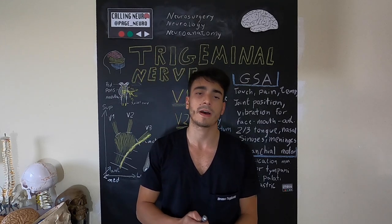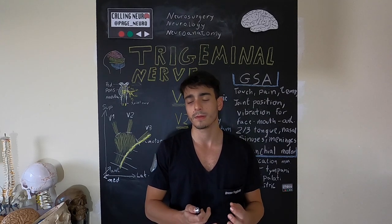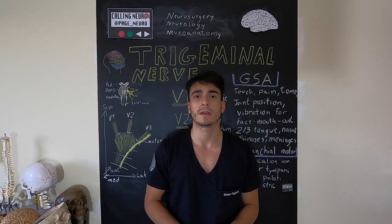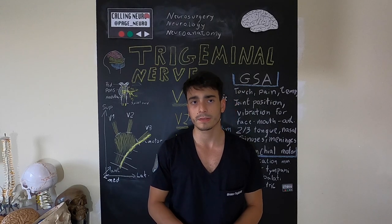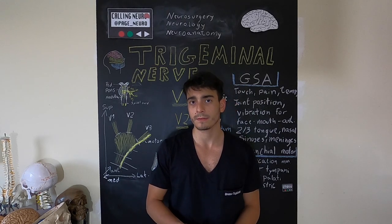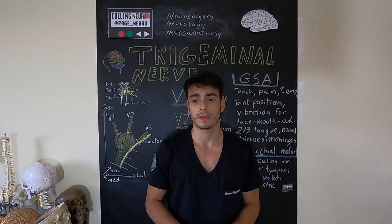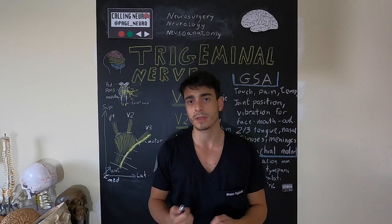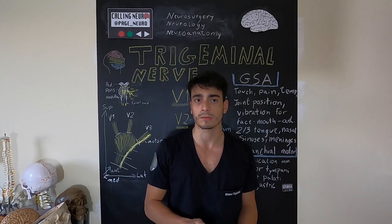The GSA component provides sensory innervation from the face, mucous membranes of the nasal and oral cavities, the frontal sinus, hard palate, deep structures of the head for proprioception from muscles and the temporomandibular joint. It also innervates the anterior and middle cranial fossa, or the supratentorial fossa.